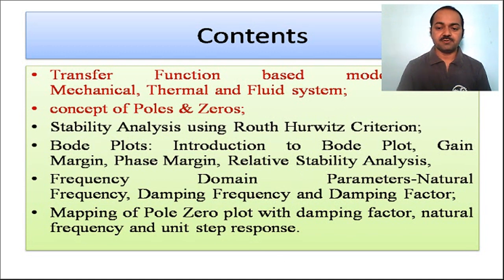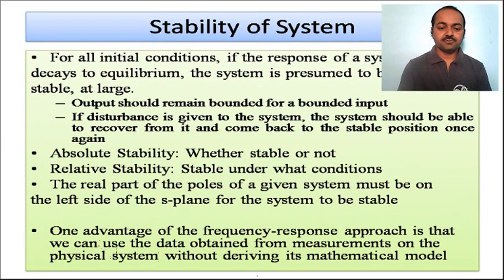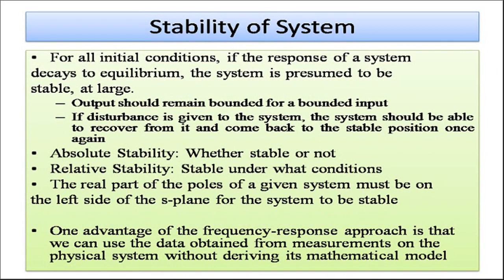We will discuss poles and zeros in more detail. Basically, for all initial conditions, if the response of the system decays to equilibrium, the system is assumed to be stable. A system is stable only when all initial conditions and the response decay to equilibrium, because a disturbance may cause movement but after some time the system becomes stable. For stability, the output should remain bounded for a bounded input.